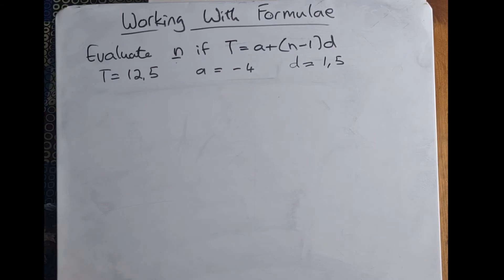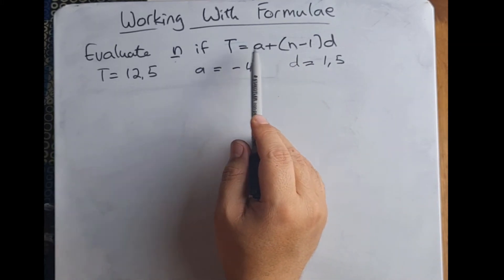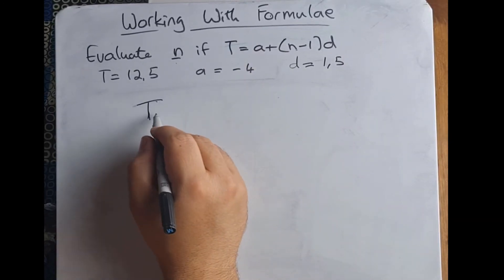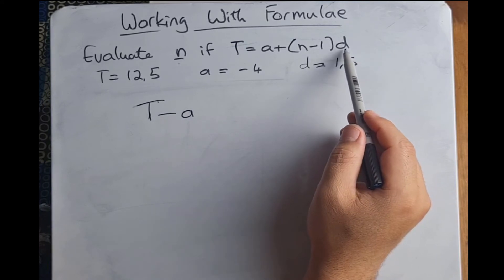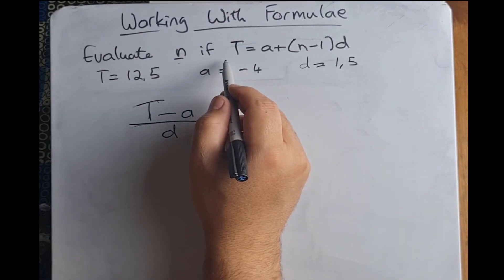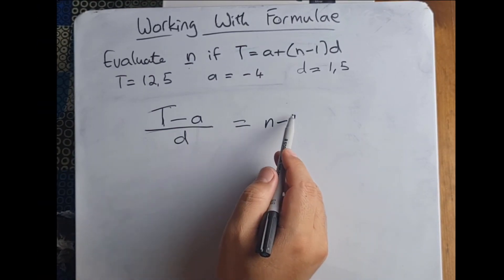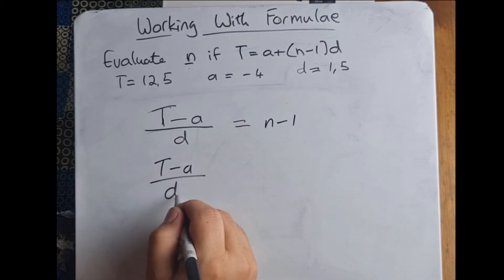All right, so another way we can look at it is to rearrange everything where instead of having it as T equals our formula, we want it as n equals our formula. So I've got T over there, I then want to bring over my a, so that's going to become minus a. Then remember what I did in the previous example, I had to divide this number by itself, so it's going to be divided by d. That'll give me equals n - 1, and then remember in order to bring that over that's got to be a positive, so then my formula ends up reading (T - a) / d + 1 = n.